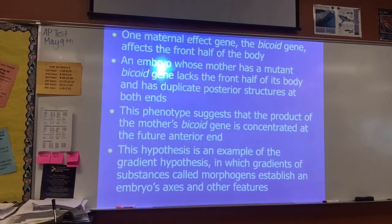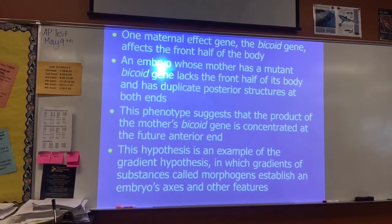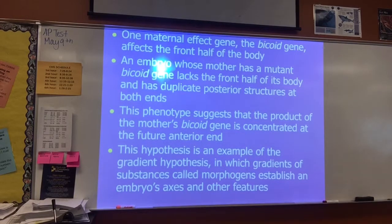We're going to look at one maternal effect gene called the bicoid gene, which affects the front half of the body — really the head and tail region. An embryo whose mother has a mutant bicoid gene lacks the front half of its body and has duplicate posterior structures at both ends — posterior structures being the tail. This phenotype suggests that the product of the mother's bicoid gene is concentrated at the future anterior, or head, end. This hypothesis is an example of the gradient hypothesis, in which gradients of substances called morphogens establish an embryo's axes and other features.